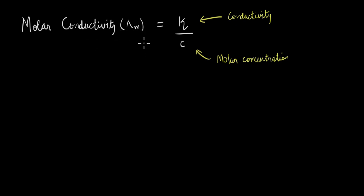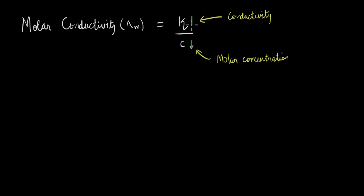On a first look, it does seem like concentration and molar conductivity are inversely related, so if you decrease the concentration it looks like molar conductivity should increase. But this is wrong, because kappa — the conductivity — is also dependent on concentration. We just saw that when we decrease the concentration, kappa also decreases. So just by looking at this relation alone, we cannot understand the variation of molar conductivity with concentration. For that, let's go back to our definition of molar conductivity.